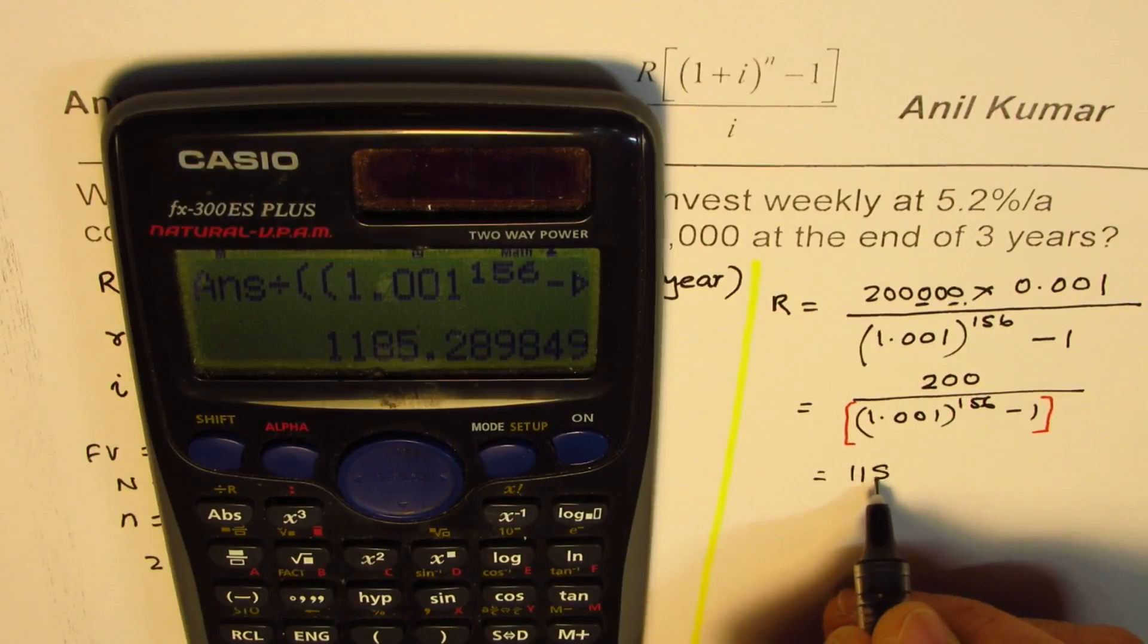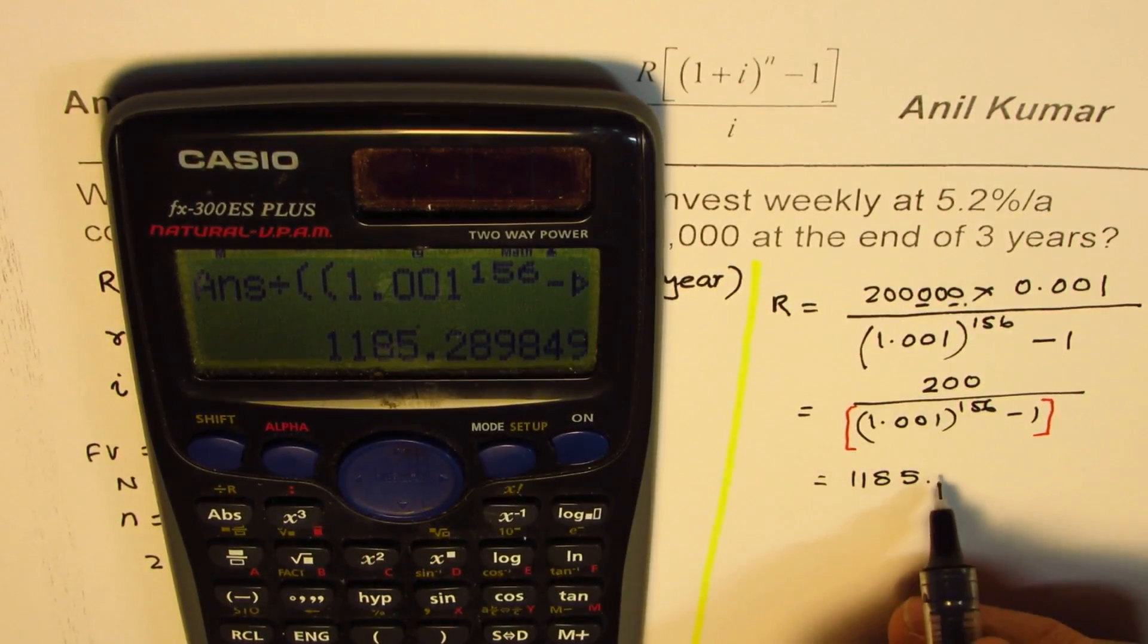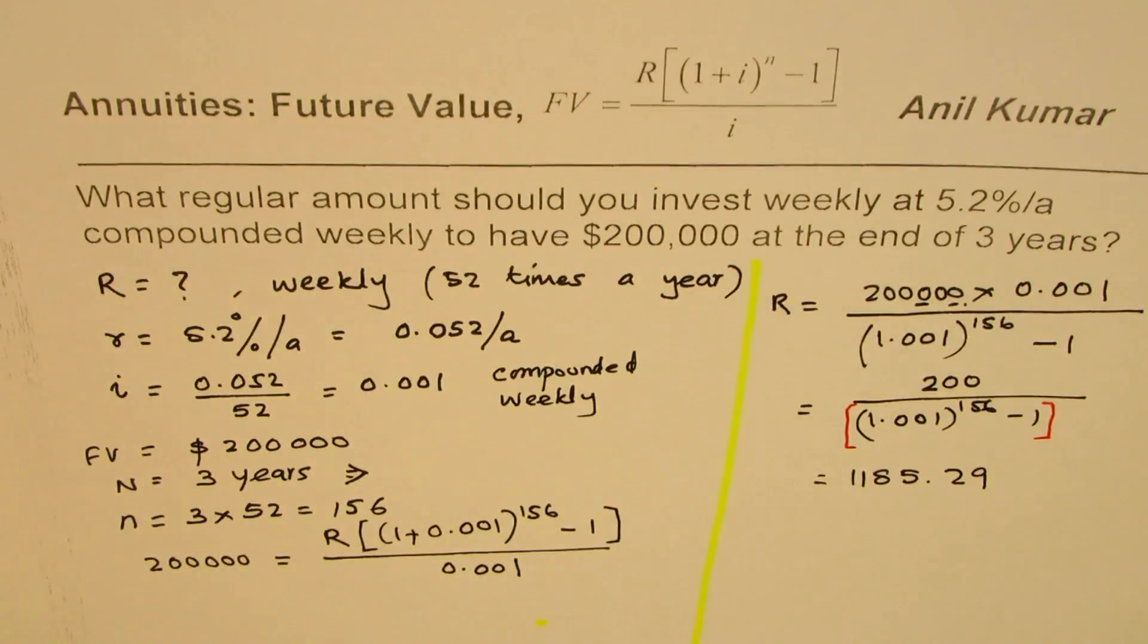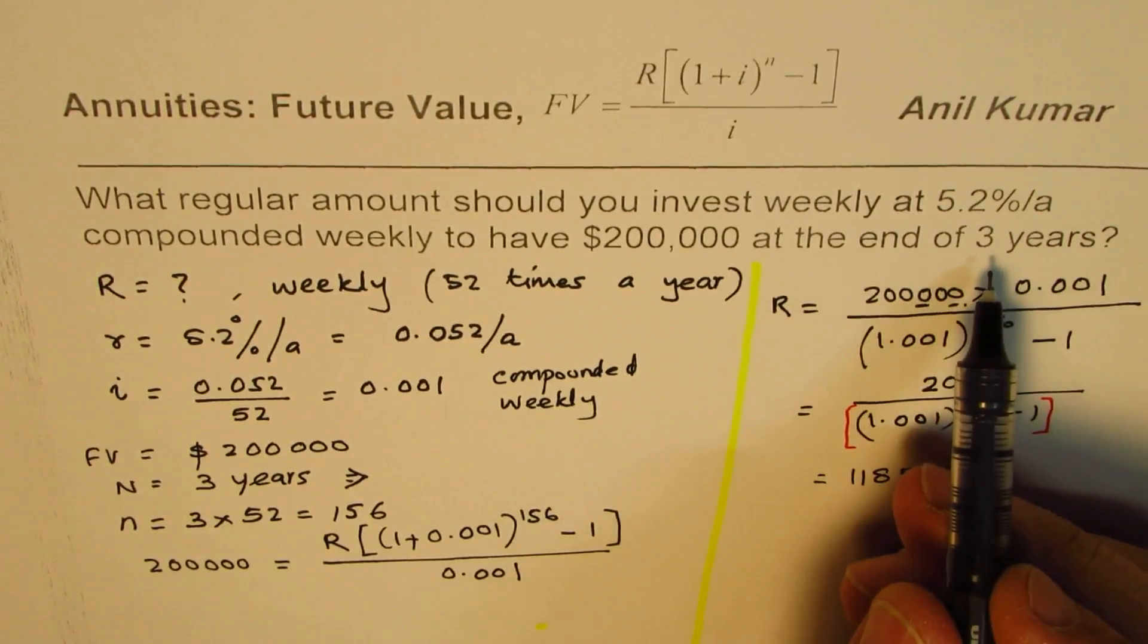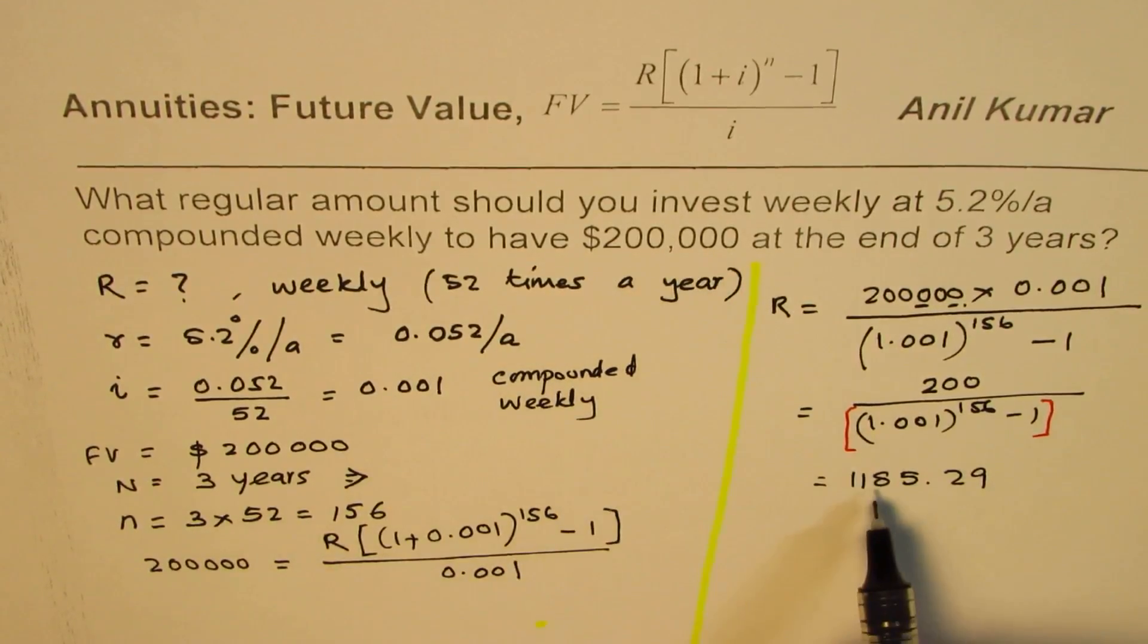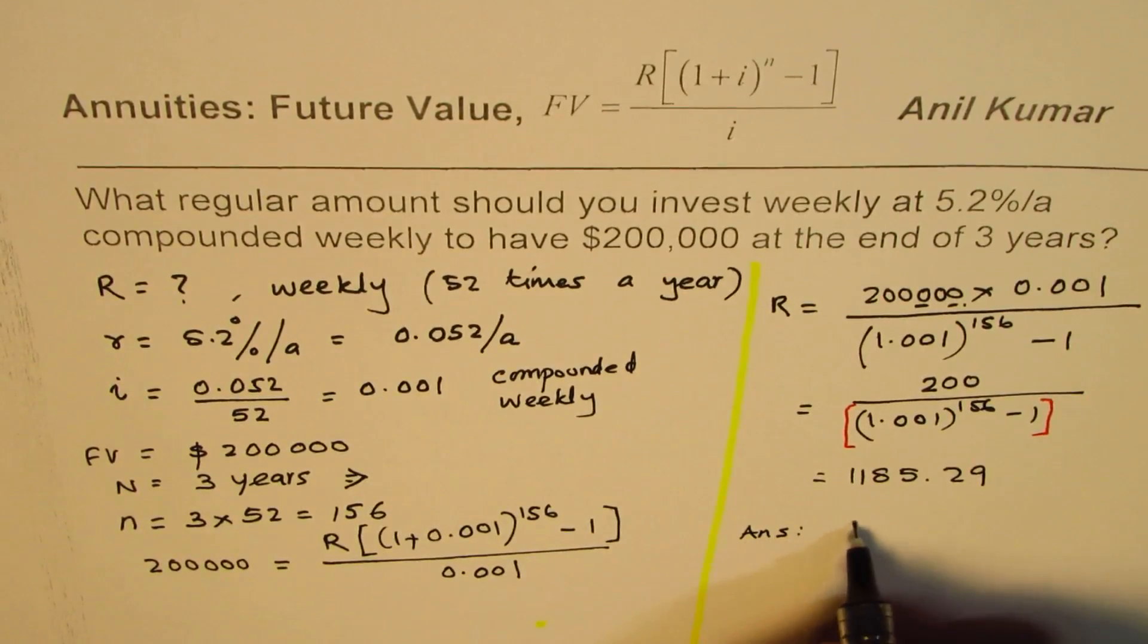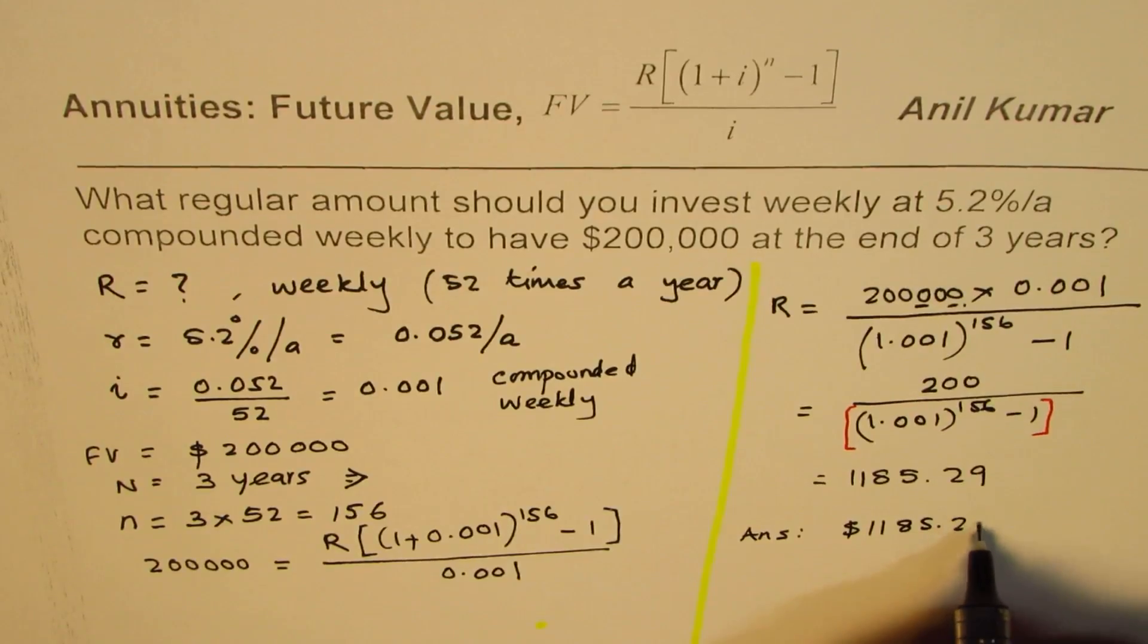Which is 1185.289. Round it to two decimal places, 1185.29. So that is the amount which you should be depositing every week for three years to get 200,000 when you're getting compound interest of 5.2% per annum. So we get our answer, and that is dollars 1185.29.